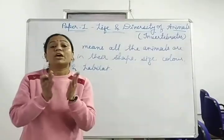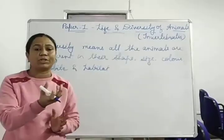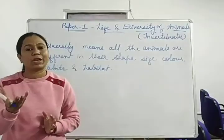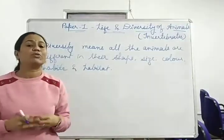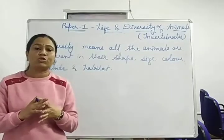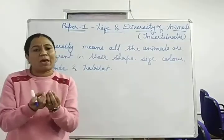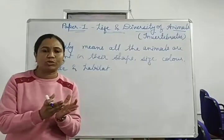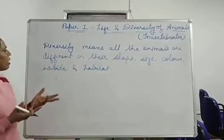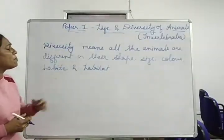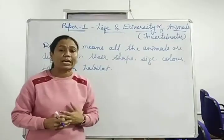If you are talking about shapes, some animals are also different. Some animals can be spherical or square shape, long animals. Some shapes are not fixed in their shape. For example, protozoans, specifically amoeba — the shape is not fixed.